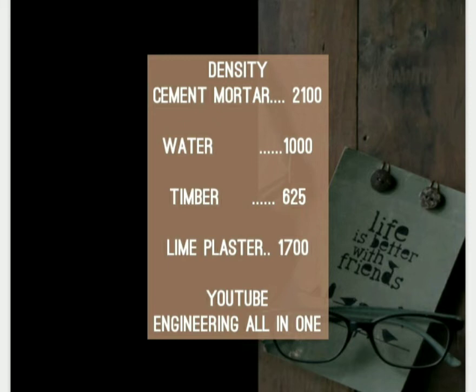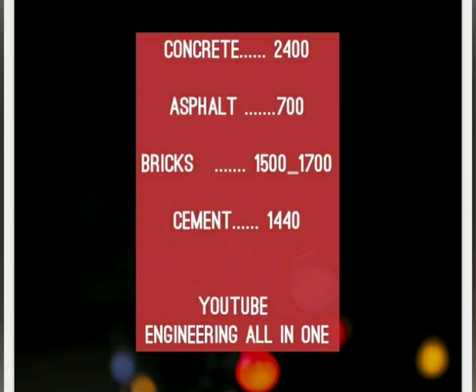Concrete has a density of 2400 kg per cubic meter. Asphalt, a material used in highway engineering, has a density of 700 kg per cubic meter. Bricks have a density ranging from 1500 to 1700 kg per cubic meter, and cement has a density of 1440 kg per cubic meter.